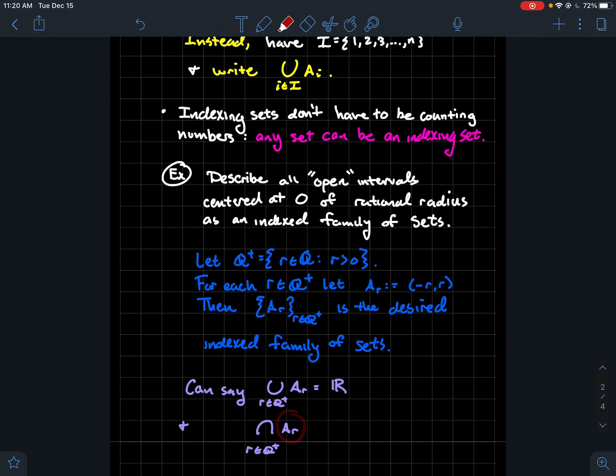The intersection here means it's got to be in every single one of these sets. And so think about it. There's no real number that's in every single one of those. You can always go a little bit smaller, get a little closer to zero so that you miss that real number.